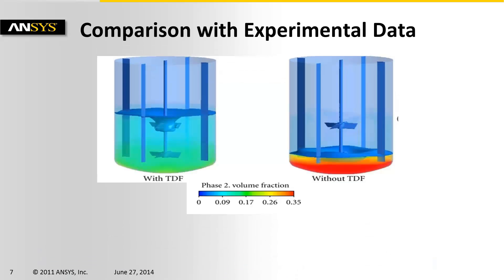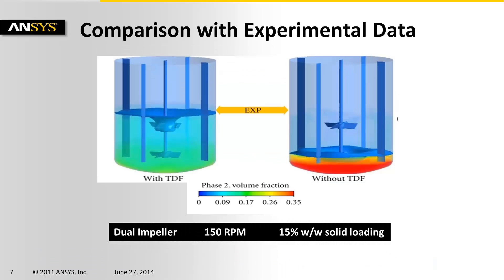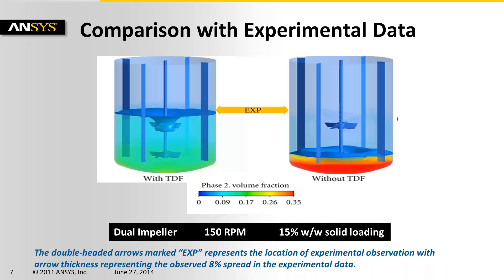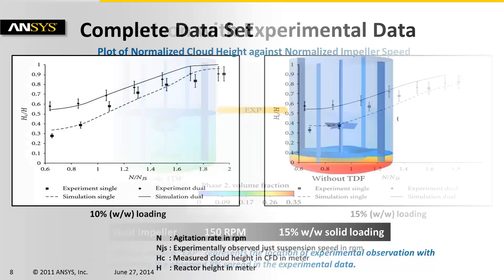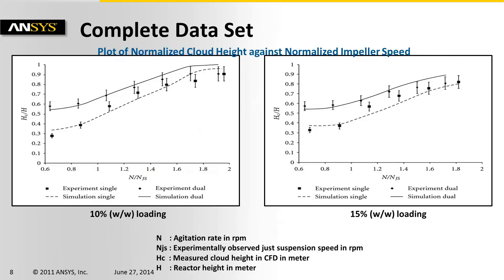How about the dual impeller configuration? Here as well we get a good match for the case with Simonin TDF. This simulation strategy was applied to a wide range of operating conditions with Gidaspow drag and Simonin TDF. The CFD predicted cloud height matched reasonably well with the experimentally observed data across the range of speeds above and below just suspension speed, with both single and dual impeller configurations using 10% and 15% solid loading.